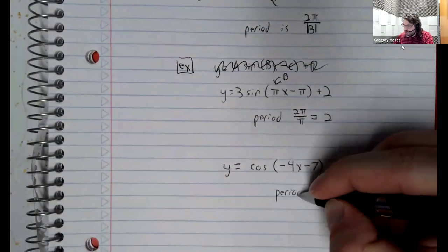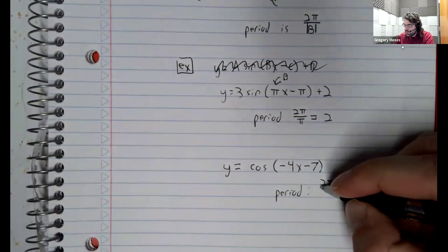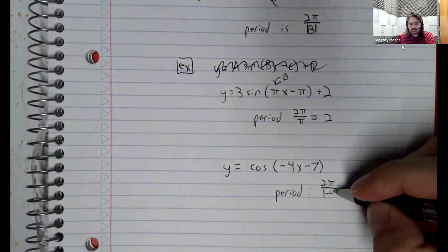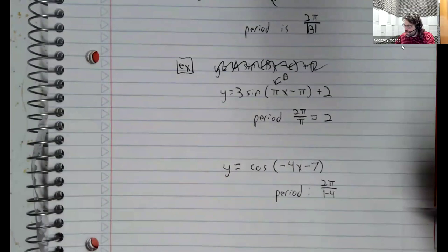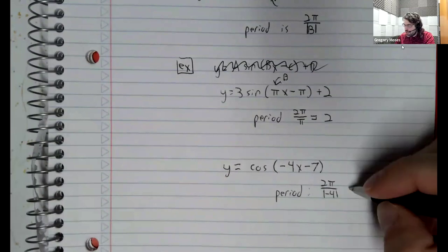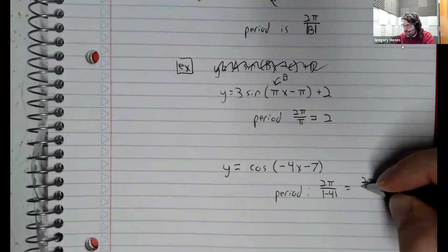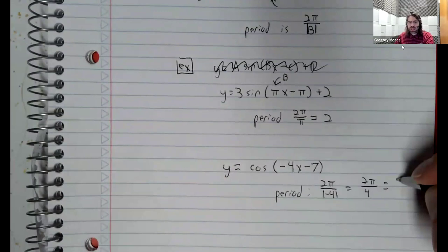So if we did happen to have a negative number in front of the x, find the period. You take 2 pi. You divide by the absolute value. The absolute value of negative 4 is positive 4. And we get pi divided by 2.